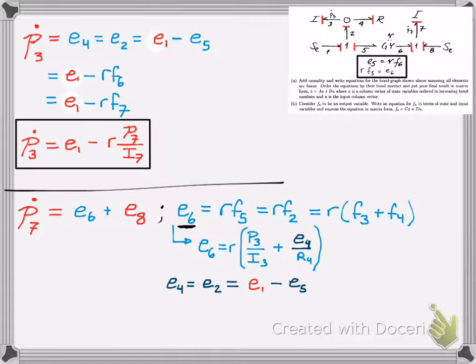Big note: The signs, like if you're figuring out if it's plus or minus effort or plus or minus flow, is determined by the arrows, not the causal strokes, not what's in red, but the arrows and which way they are going. The causal strokes, which are the red lines on the bond graph, are what help you determine the equations. So causal strokes help you determine the equations. The arrows on the bond graph determine the sign of the effort or flow, depending on what you're looking for. Now let's figure out what E5 is.